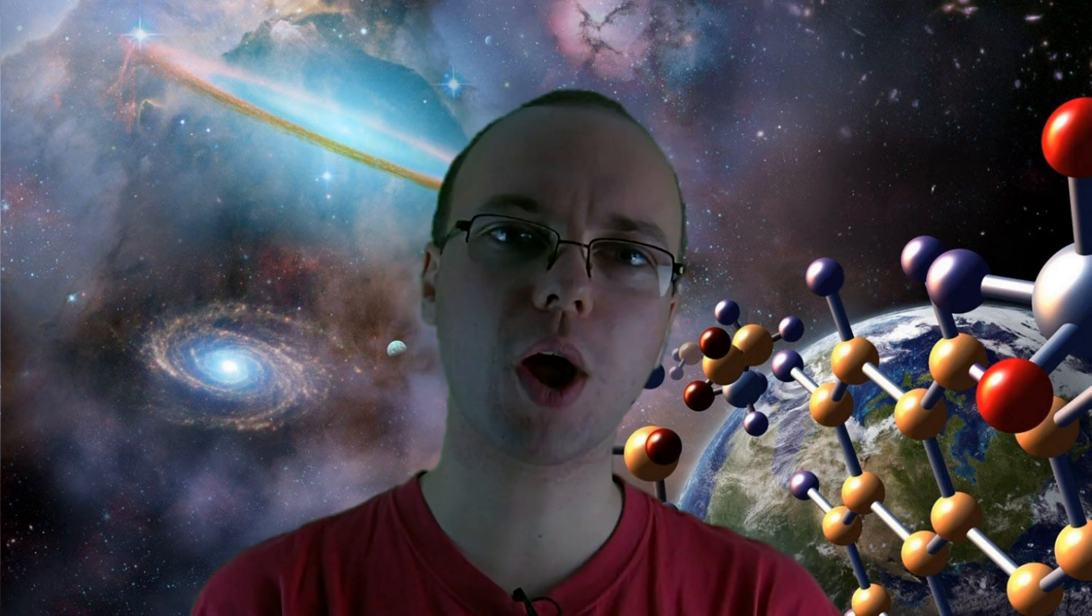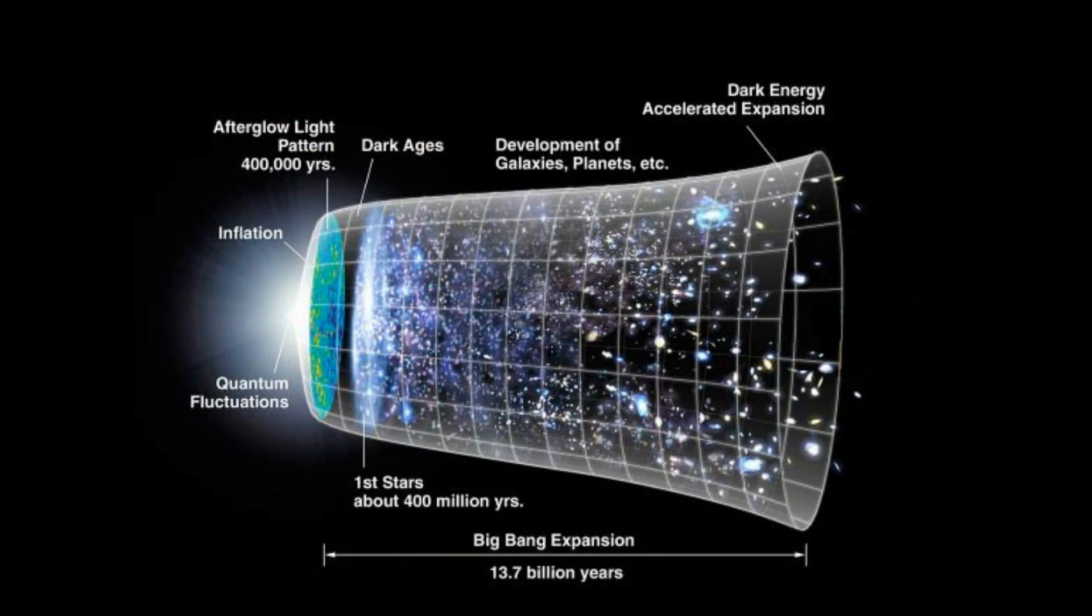So now we have an understanding of what life is, there's two questions we need to ask in order to be able to understand its origin. Firstly, where did the building blocks of life come from? And secondly, just how did these building blocks manage to combine and grow in complexity in order to create the first living system? So to answer this, let's turn back the clocks right to the beginning, 13.8 billion years ago, the Big Bang.